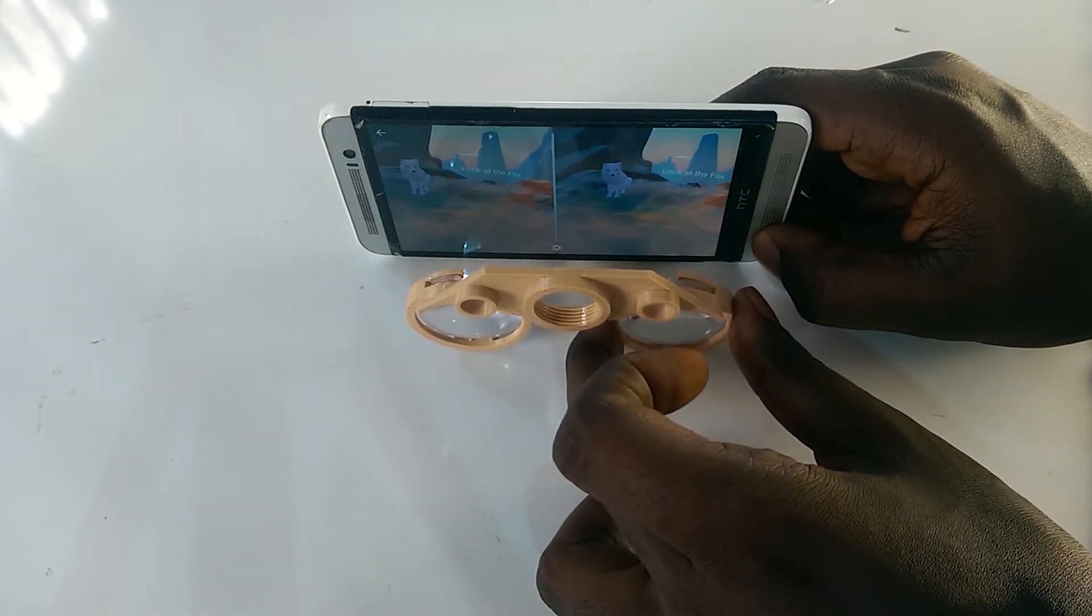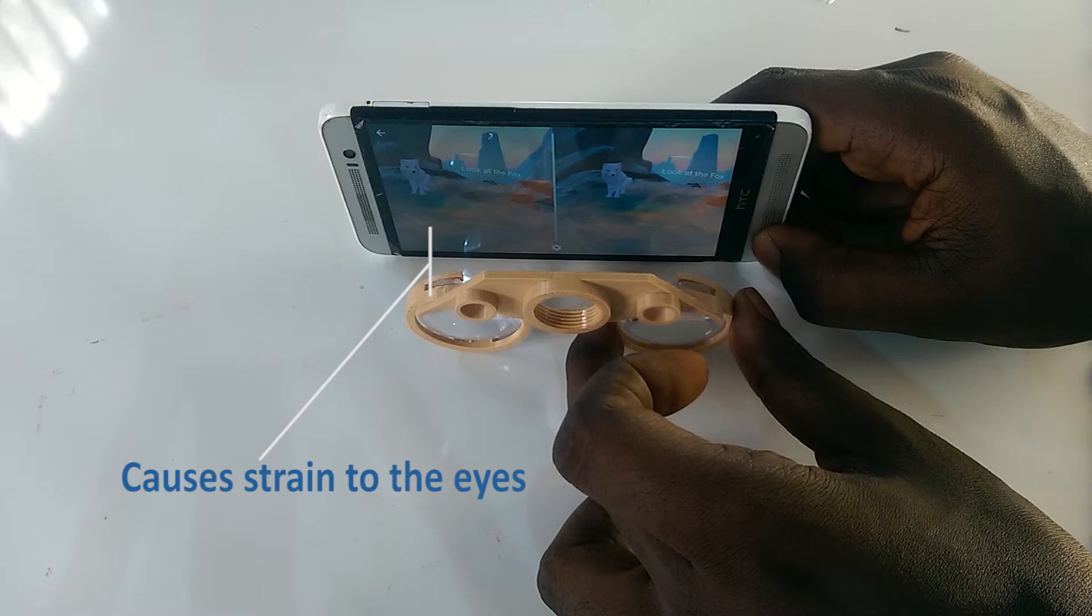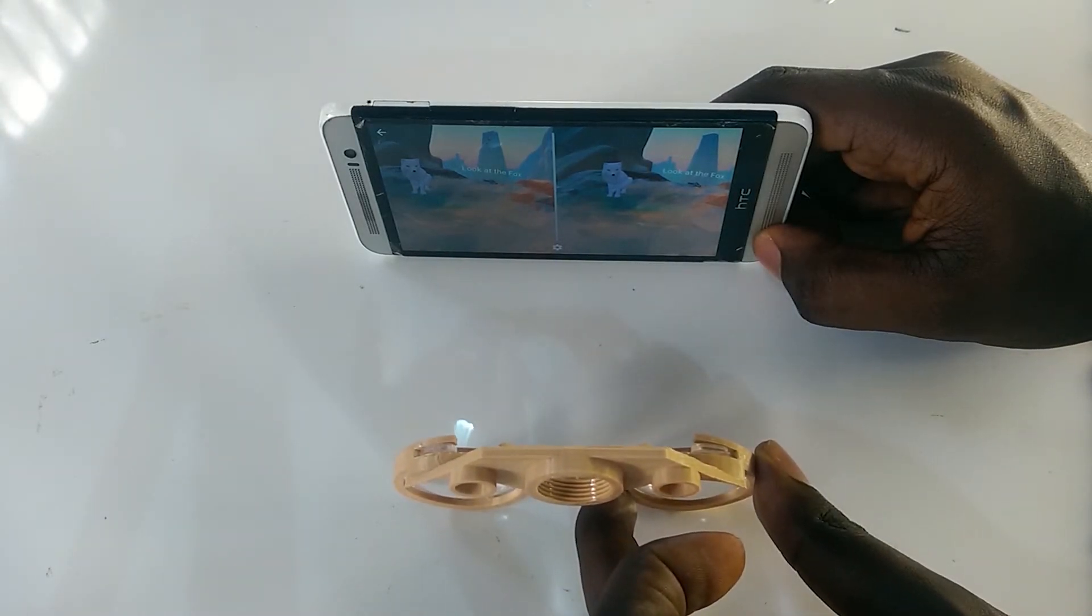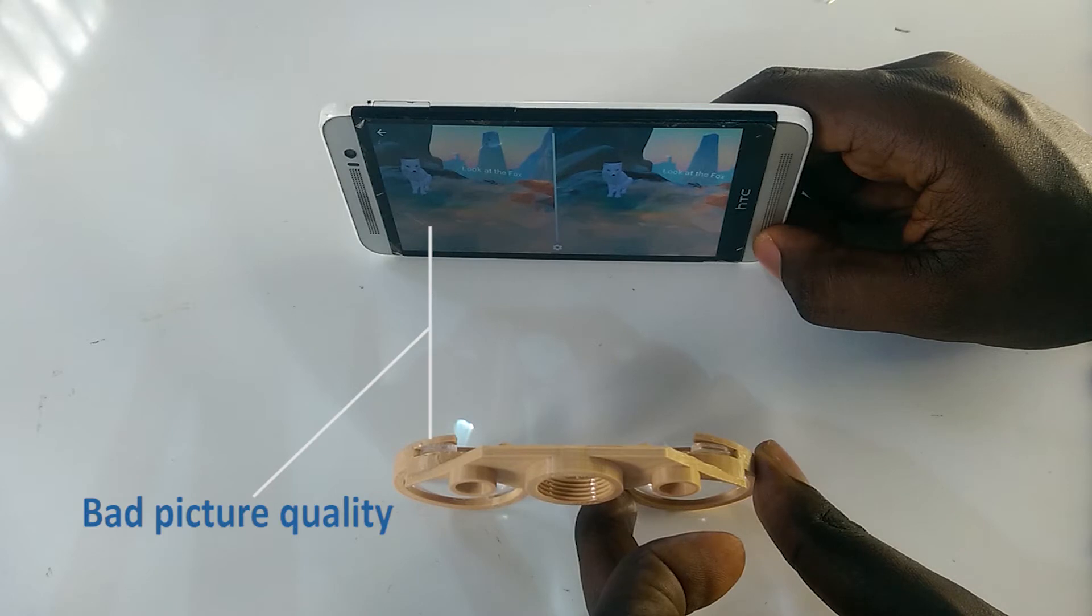Placing the lens too close to the screen will either make it impossible for your eyes to focus on the screen or just strain your eyes too much when you're using the cardboard. At the same time, placing the lens too far from the screen will result in bad picture quality.